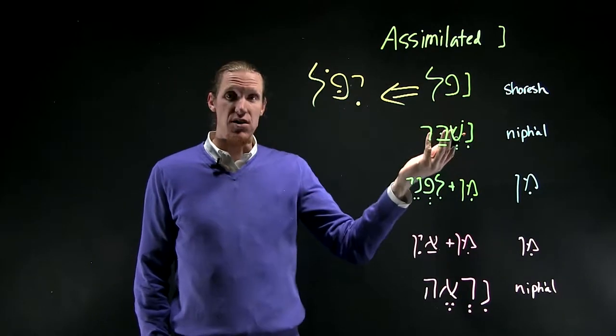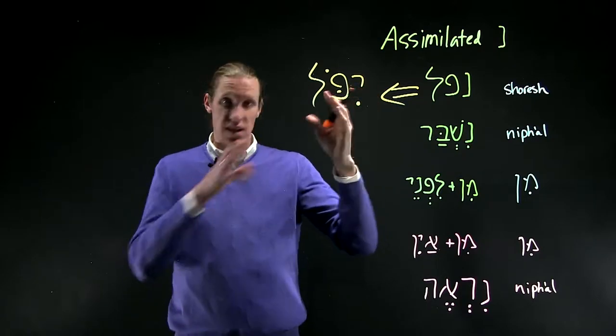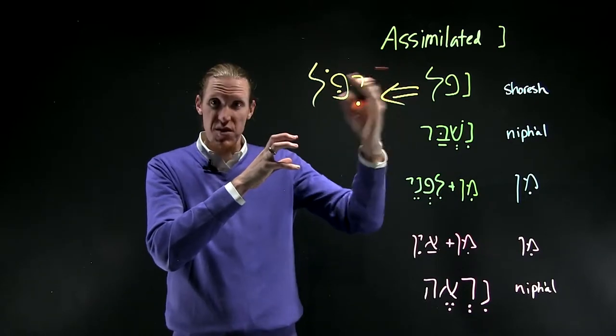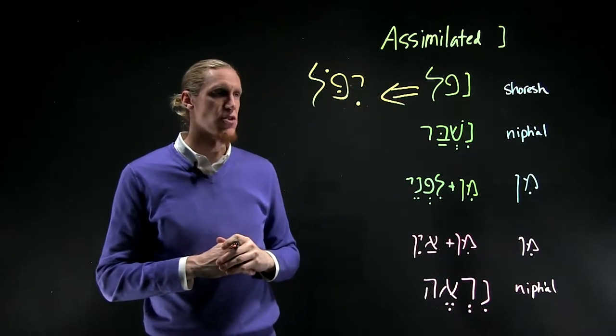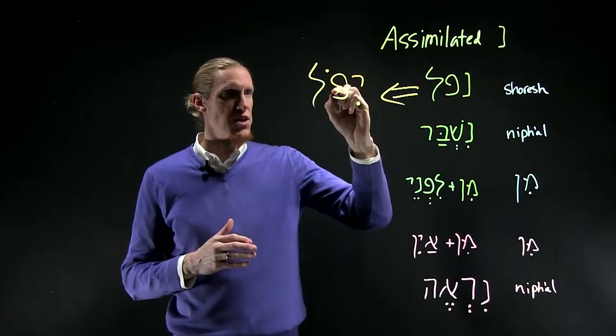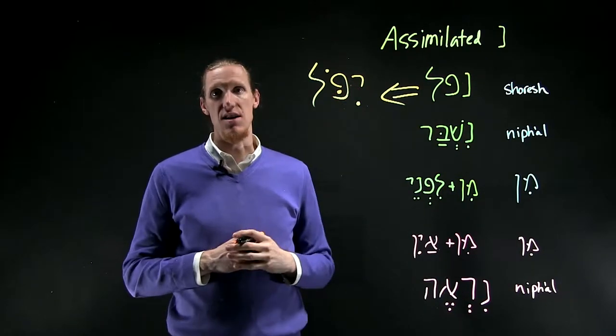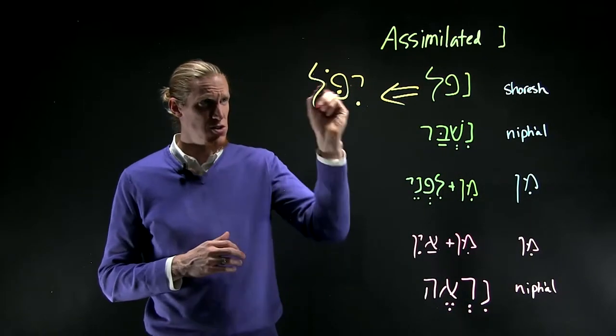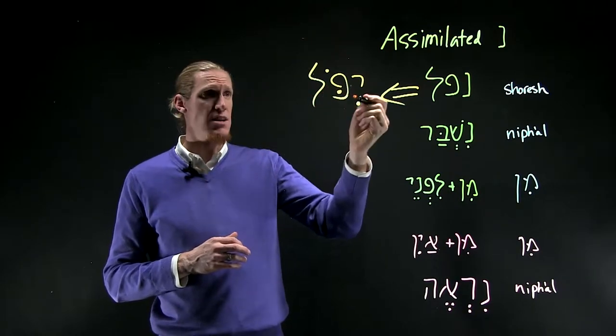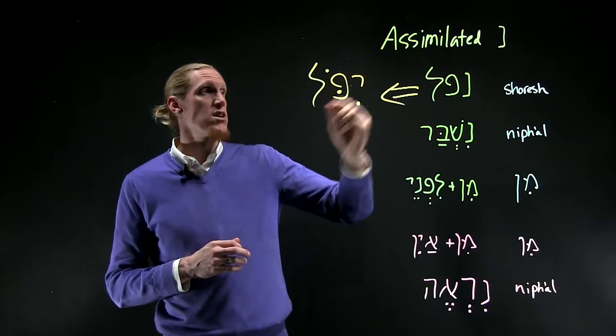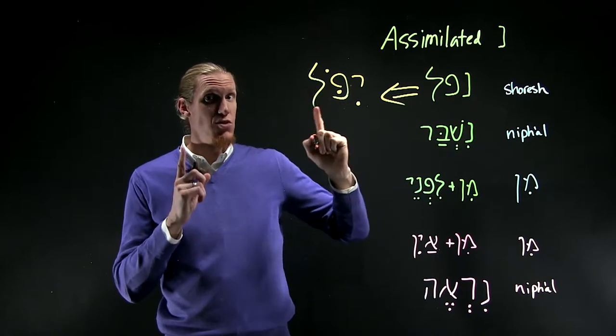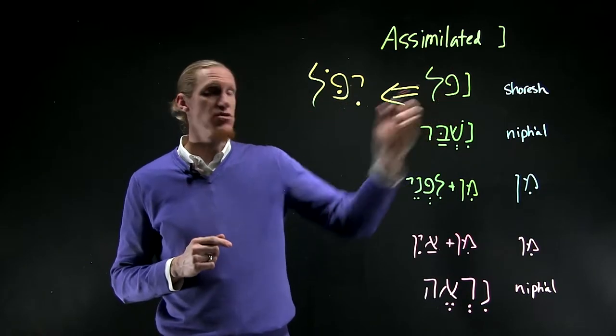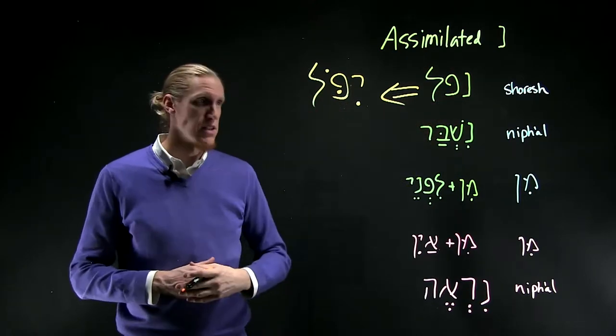Now the noon disappears because it gets claustrophobic when the prefix comes on the other end of it. So what it does is it becomes a dagesh forte in the pe. So you see a dagesh forte in the first visible root letter, you have a pretty good chance that the first root letter is Nun and it's assimilated into the pe.